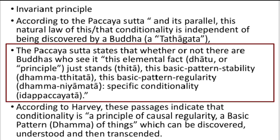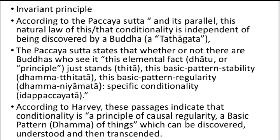Buddha uses various terms such as dhātu, meaning principle; titha, meaning standards; dhamma-tthiti, meaning basic pattern of stability; dhamma-niyāmatā, meaning basic pattern of regularity; and idappaccayatā, meaning conditionality or logic — which are the basic principles through which one achieves the dhamma, meaning right vision, through which dependent origination and causation can be understood.